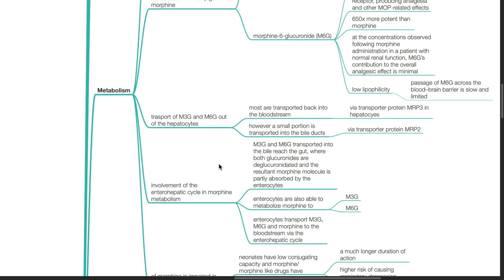Transport of M3G and M6G out of the hepatocytes. Most are transported back to the bloodstream via transporter protein MRP3 in hepatocytes. However, a small portion is transported into the bile ducts via transporter protein MRP2.